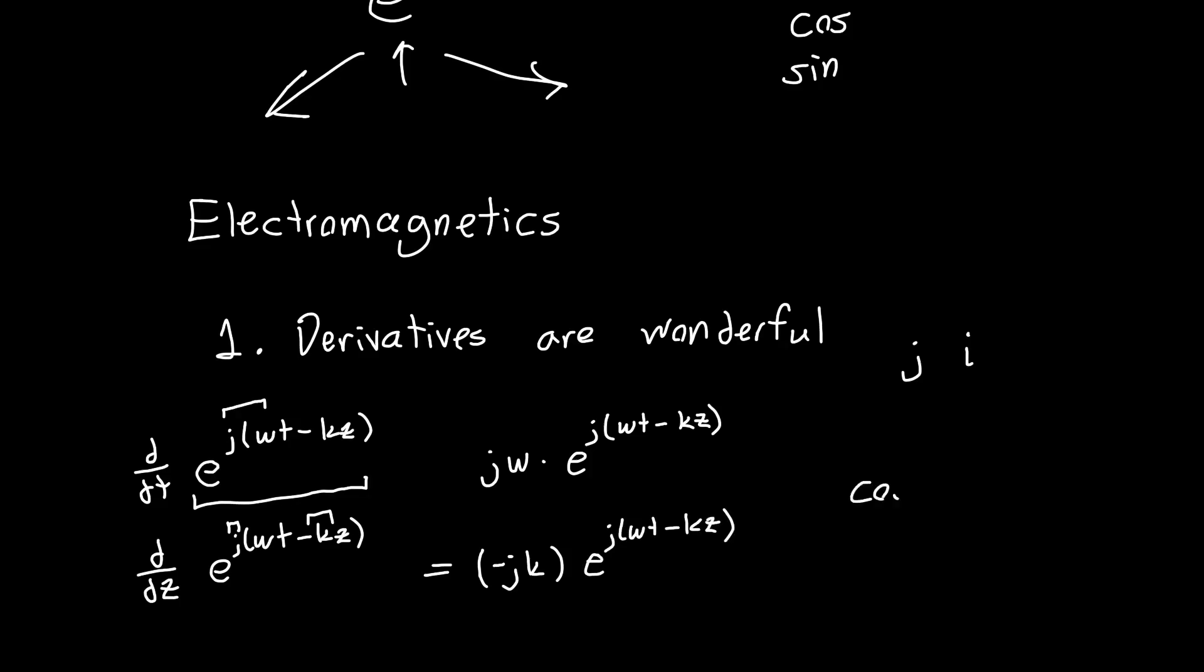So we've got none of this cosine switching to sine and back again, and then a negative sine in this direction and a positive sine. No, none of that nonsense. Just multiply by a constant.